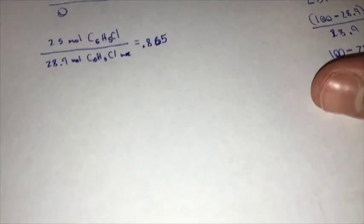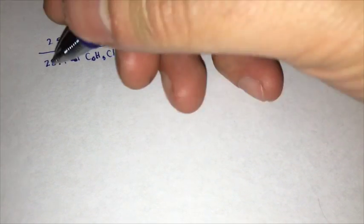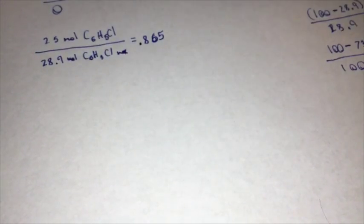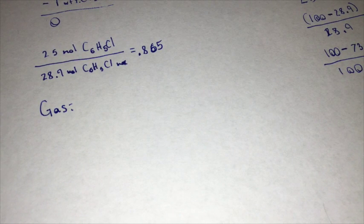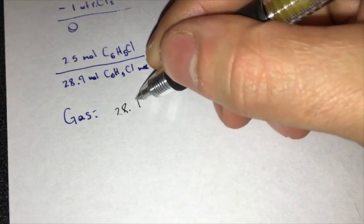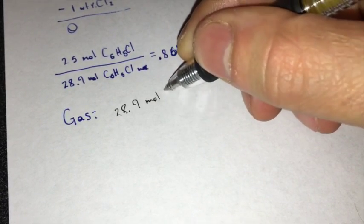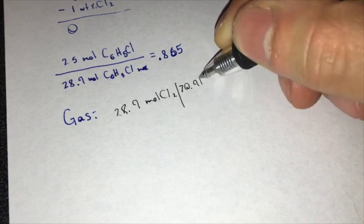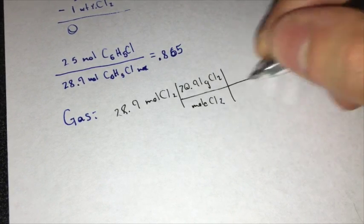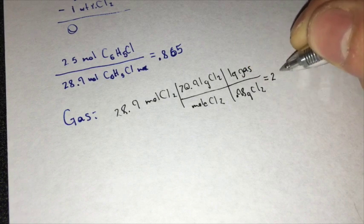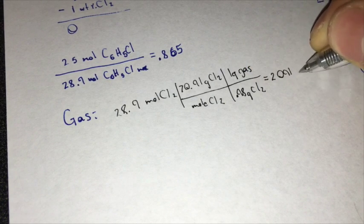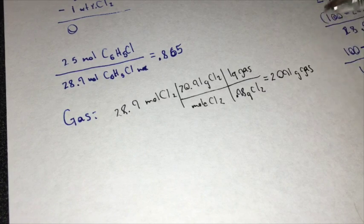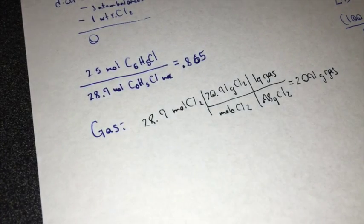And for the gas feed, we need to find the gas feed and the liquid feed to finish this problem. So gas is going to be equal to our 28.9 moles of Cl2, which equals 2,091 grams of gas, and we get the liquid feed also.